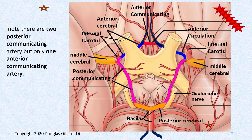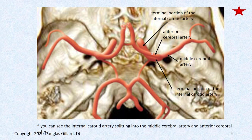We can see the optic chiasma, how it's kind of centered right in the middle of that. The internal carotid artery does a U-turn here, usually goes under the anterior clivus, and dead ends, splitting into two branches: the anterior cerebral artery and the middle cerebral artery. The posterior communicating artery plugs into this very last part of the internal carotid artery.